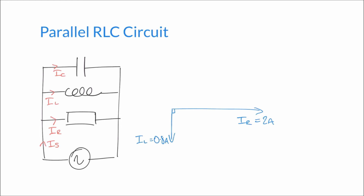Finally, our capacitive current IC is 0.25 amps, and any current through a capacitor leads by 90 degrees, so we draw that tilting upwards by 90 degrees. I've tried to draw the phasor diagram roughly to scale, where the size of the current corresponds with the length of the arrow.